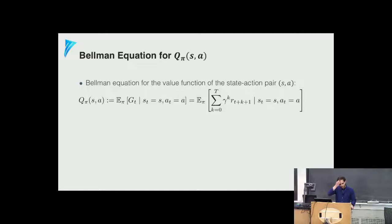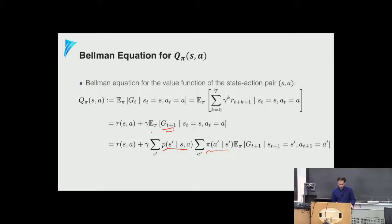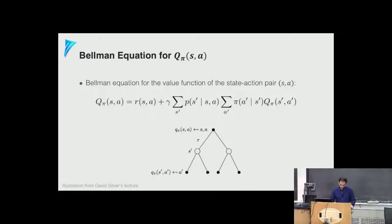A similar Bellman equation holds for the state-action value function Q^π(s, a). We expand it the same way: push out the immediate reward, then expand with respect to the transition probability and then the policy π at the next state, yielding a recursive relationship between Q^π(s, a) and Q^π(s', a'). We get the same backup diagram for the Q function, recursively computed by expanding and then backing up.